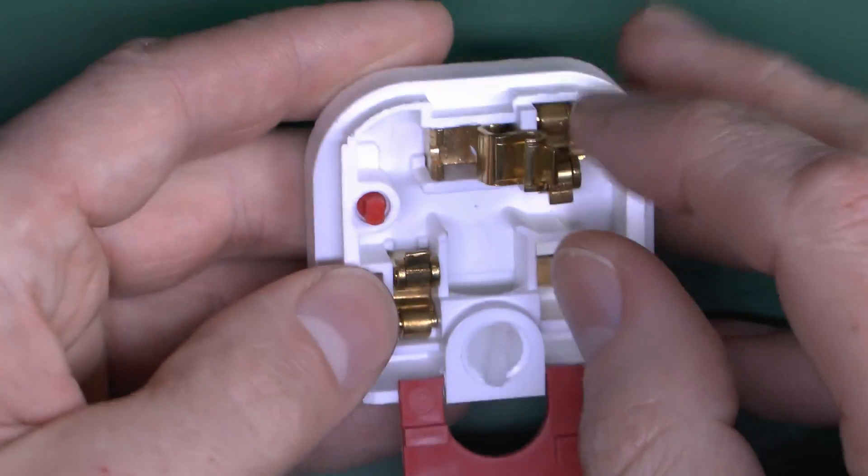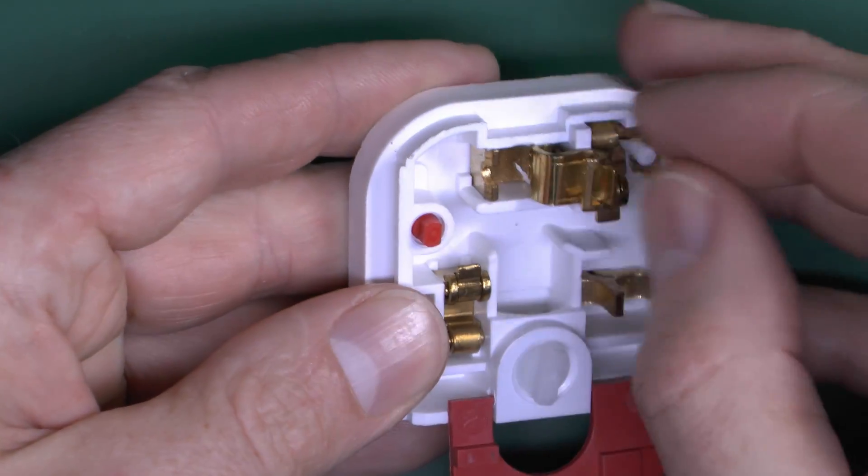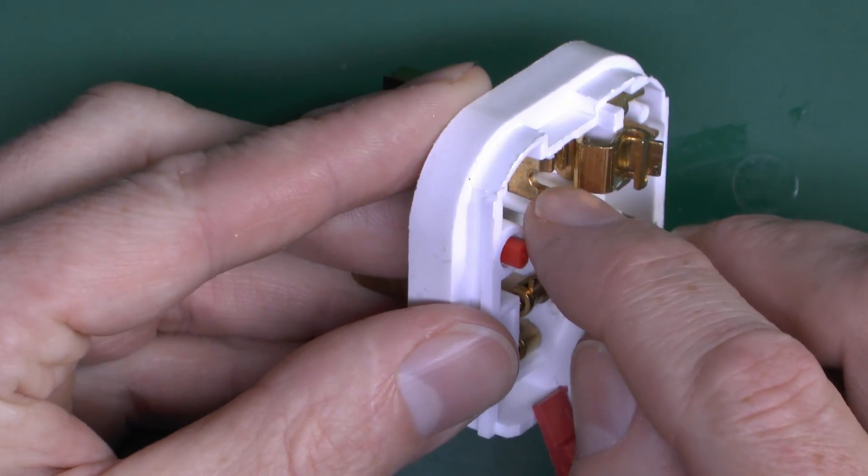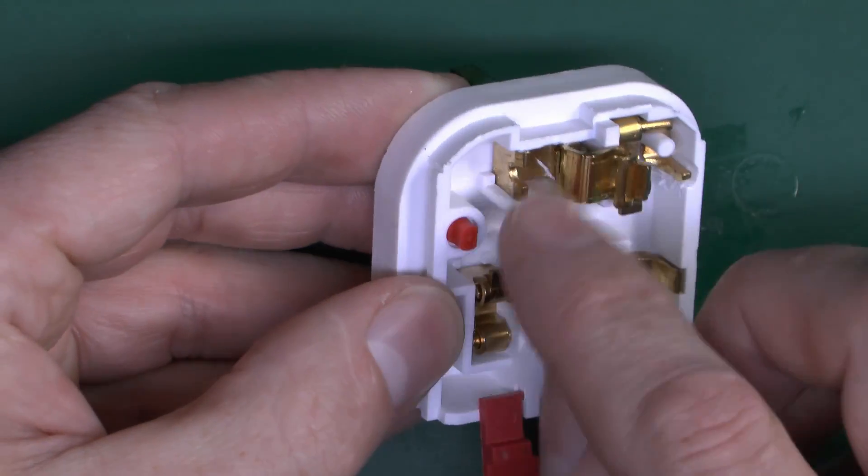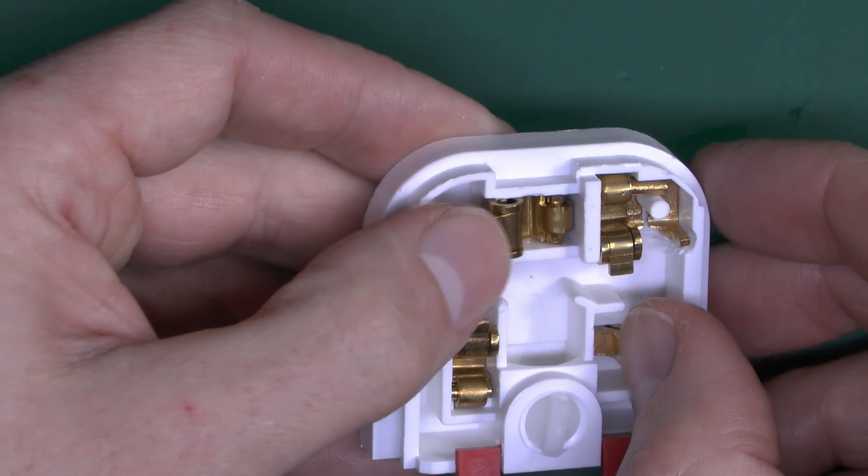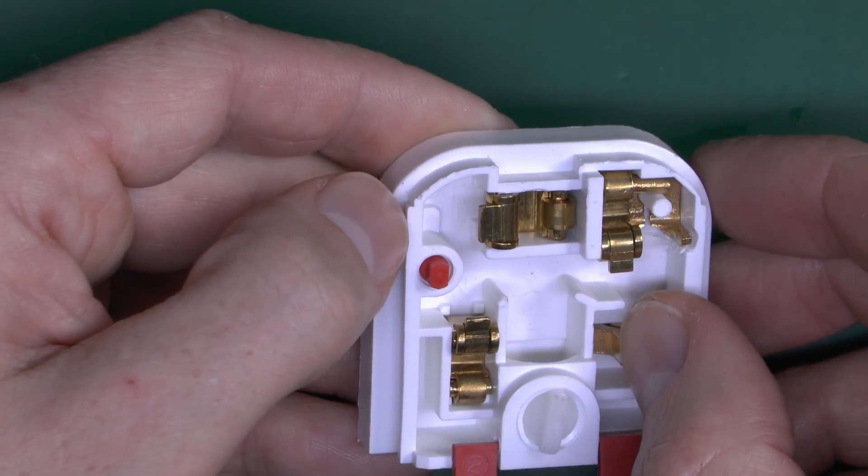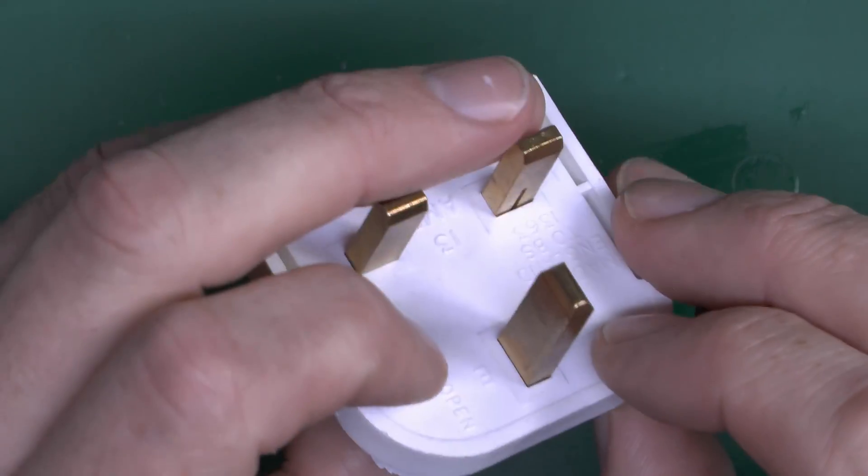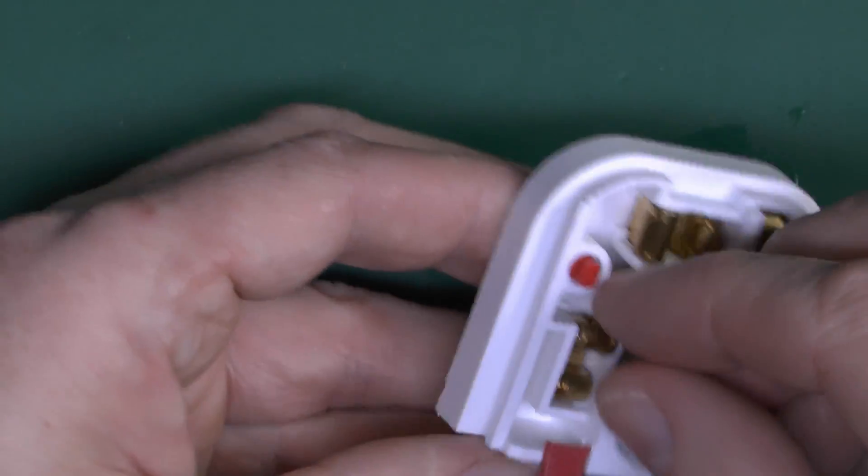And if I just do the earth one, see this piece just sort of hinges up there with a little tab, and then the idea is that the wire goes through that little slot there into the bottom, and then to secure it in place you're just pressing that down over the wire, and then it just clicks down, securing it in position, and that'll be the earth pin there on the top, and the others are the same.